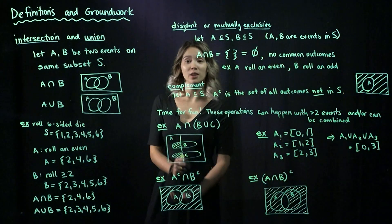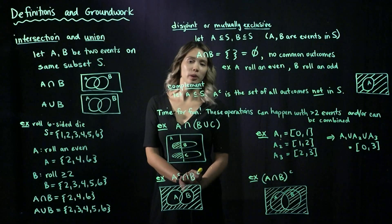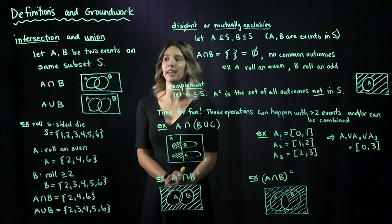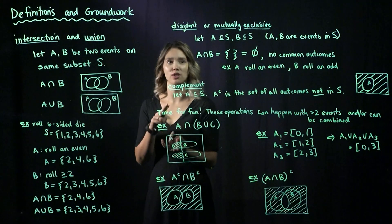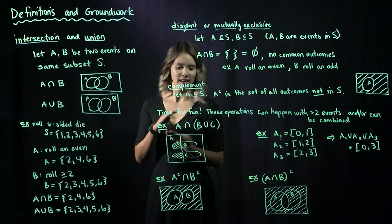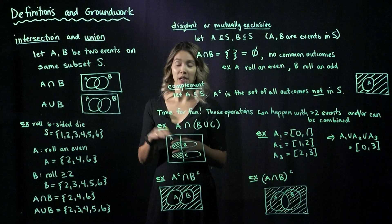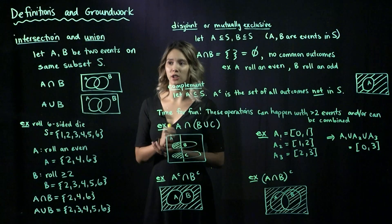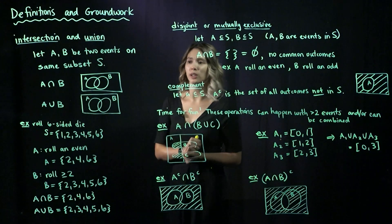In this video, we continue to lay the groundwork for probability by defining intersection, union, disjoint, and complement. So first, let's start with intersection and union.